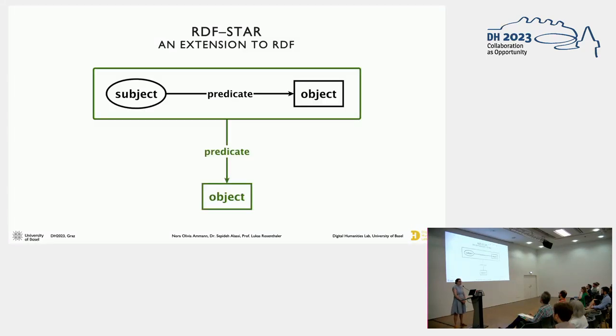So a little bit about RDF star. RDF star is an extension to regular RDF. In RDF star, it is possible to have a triple in subject or object position of a next triple. And this triple, the RDF star triple, itself then can be further in object or subject position of a triple. So we are able to create nested levels of RDF triples.